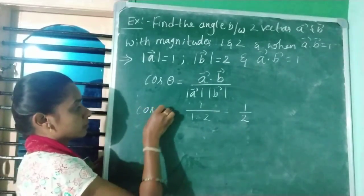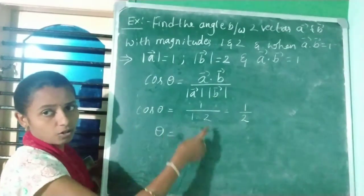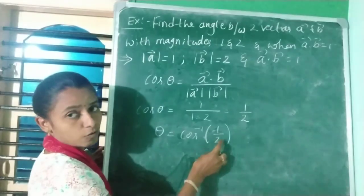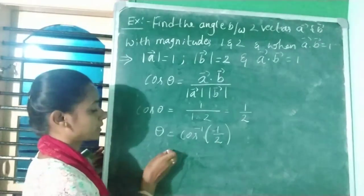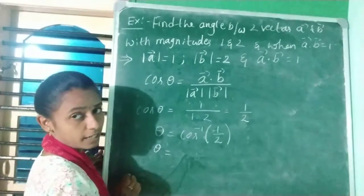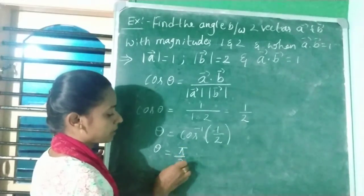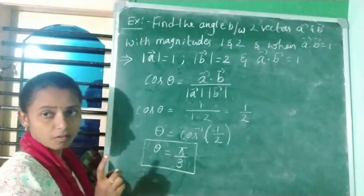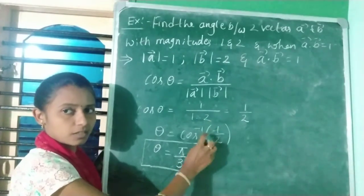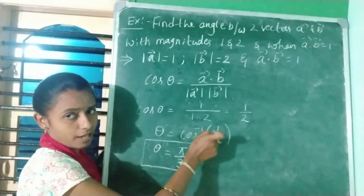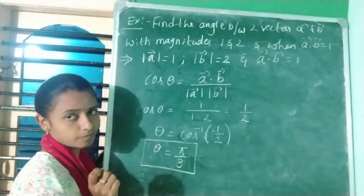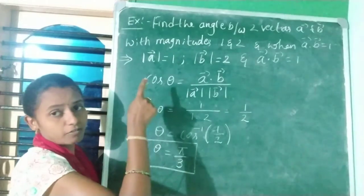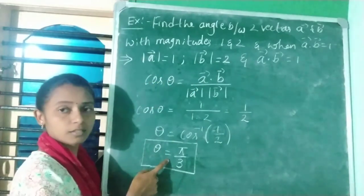So cosθ = 1/2, which means θ = cos⁻¹(1/2) = 60° = π/3 radians. Therefore, the angle between the given two vectors a and b is π/3. Always write the answer in radians, not degrees.